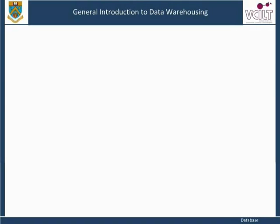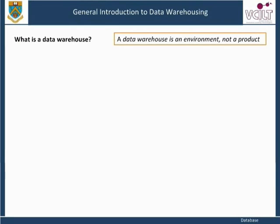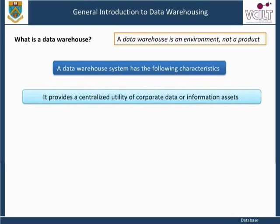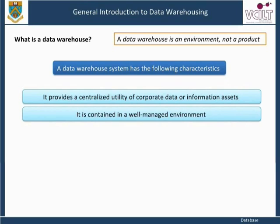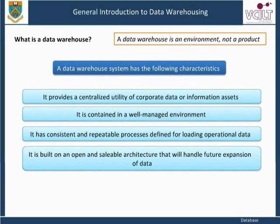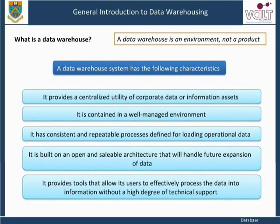A data warehouse is an environment, not a product. A data warehouse system has the following characteristics: it provides a centralized utility of corporate data or information assets; it is contained in a well-managed environment with consistent and repeatable processes for loading operational data; it is built on an open and scalable architecture that will handle future expansion of data; and it provides tools that allow users to effectively process data into information without a high degree of technical support.